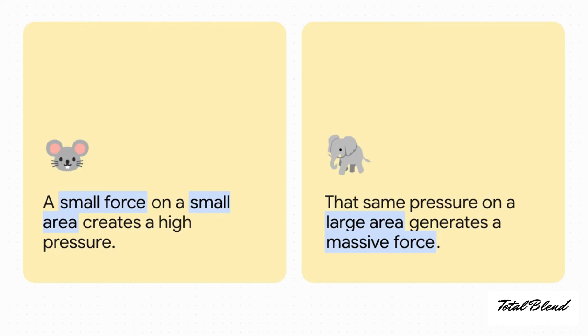This right here shows that liquid lever in action perfectly. So look at the left side, the input side. Our mouse gives a tiny push, a small force, on a piston with a really small area. According to our formula, that creates a certain amount of pressure. Now, thanks to Pascal's law, that exact same pressure zips through the fluid over to the output piston on the right. But here's the trick. That output piston has a much, much larger area. So that same pressure, pushing across a huge surface, creates a gigantic output force.